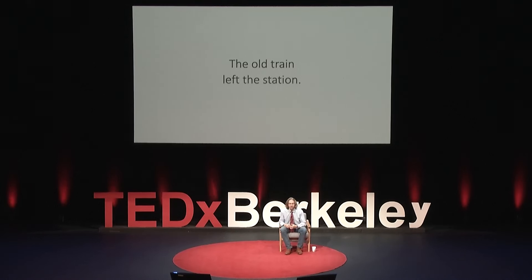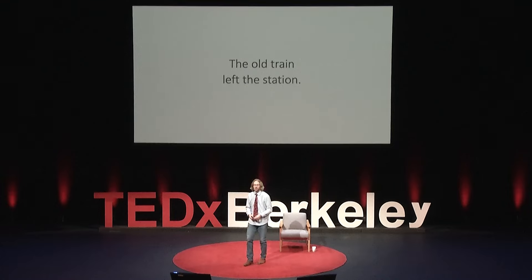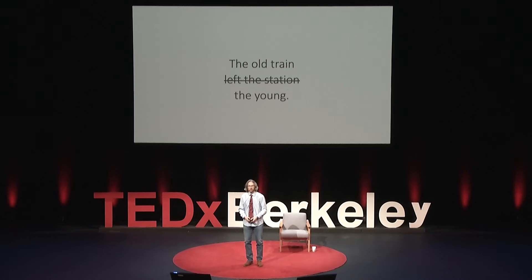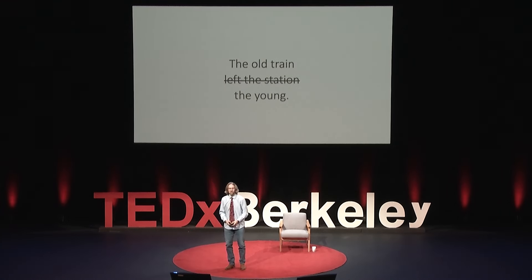I want you to consider this sentence to illustrate what I mean about patterns: 'The old train left the station.' You're probably picturing an ancient, run-down locomotive pulling out of a depot. What if I change this sentence? 'The old train the young.' Old becomes an elder. The elders educate the youth. Train goes from being a locomotive to the act of education. The meaning of the first part of the sentence completely changes with the addition of new information, because as a whole, the sentence has a pattern embedded in it.